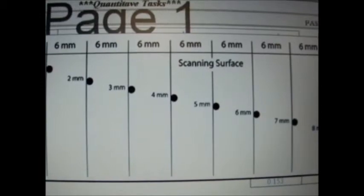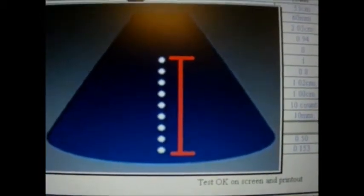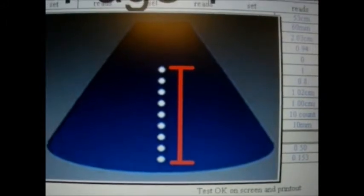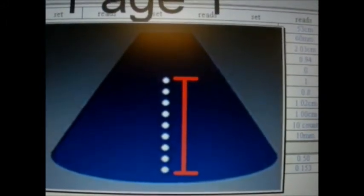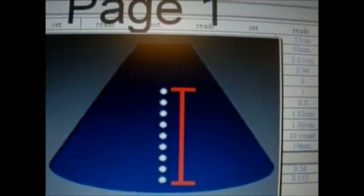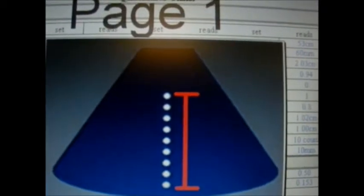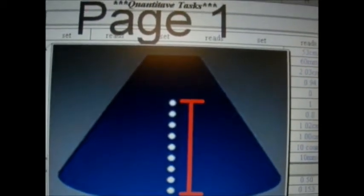Next is depth of penetration, also known as skin depth. It is the depth at which a current density has decreased 36% of the surface. Lower frequencies are used for deeper penetration. Therefore, as the frequency increases, penetration decreases.